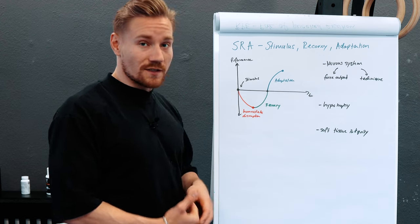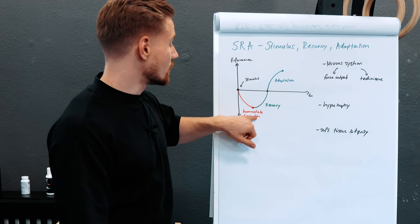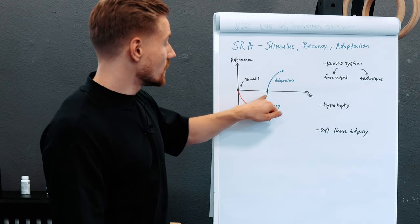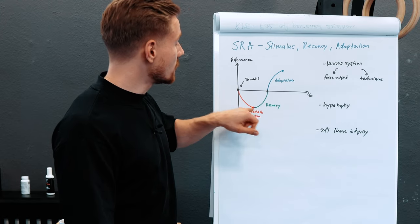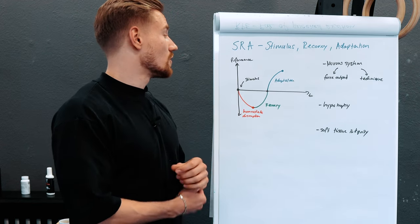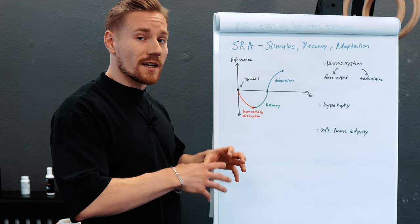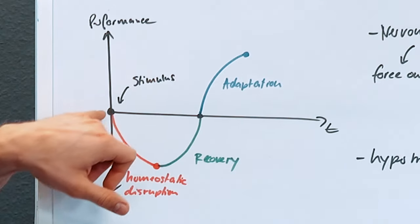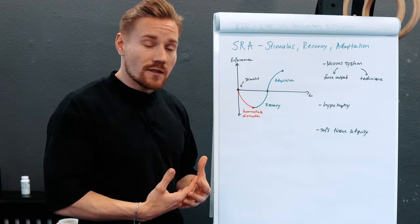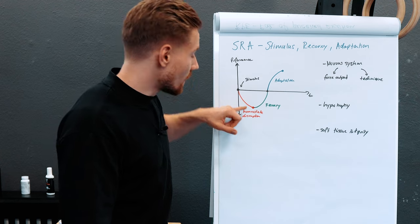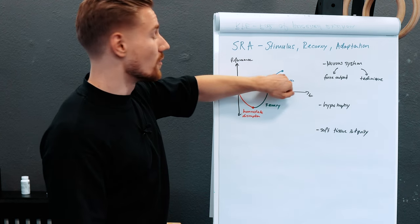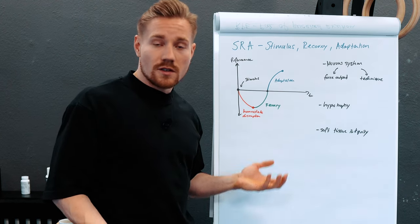After this homeostatic disruption from the training stimulus, there is a recovery process — the system heals and goes back into homeostasis. Then the adaptation occurs: over time the system adapts to be better prepared for the next upcoming stimulus. You give your body a training stimulus, disrupt homeostasis, and through recovery and adaptation you reach a higher performance level. So far, so easy.